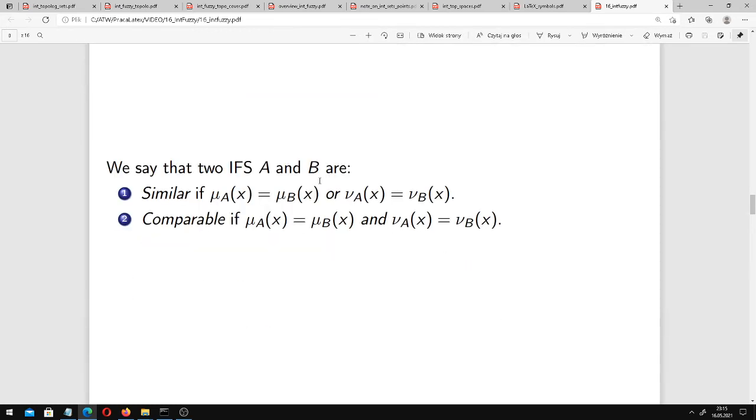We say that two IFS A and B are similar if their membership functions are identical or non-membership functions are identical for any x in our universe.